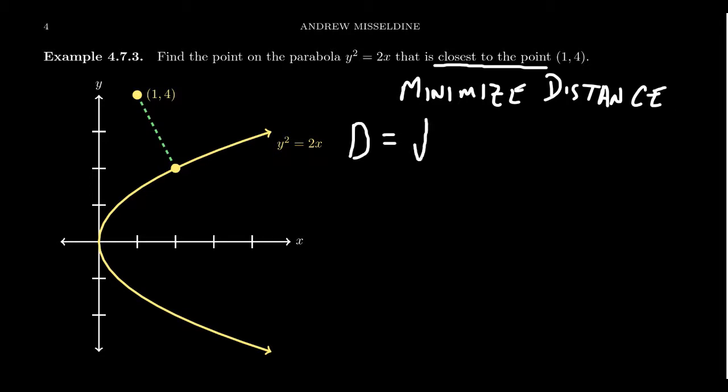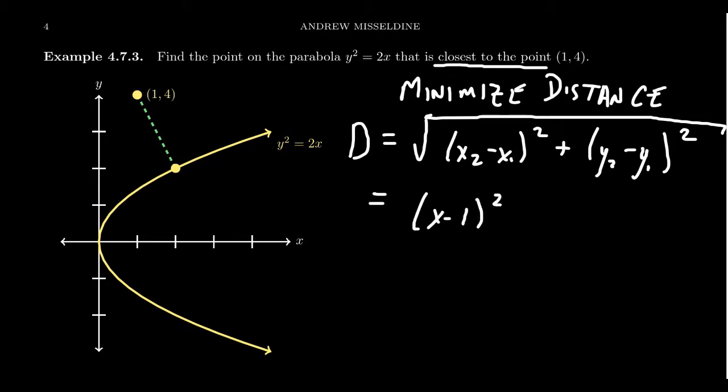So the general distance formula, you're going to take x2 minus x1 squared plus y2 minus y1 squared. And this all sits inside of the square root right here. Well, one of the points is fixed. It's the point 1, 4. So really, we're looking at x minus 1 squared plus y minus 4 squared. And we go from there. And so this is the distance we're trying to minimize.